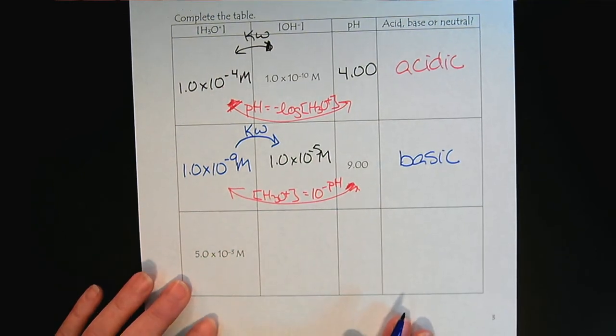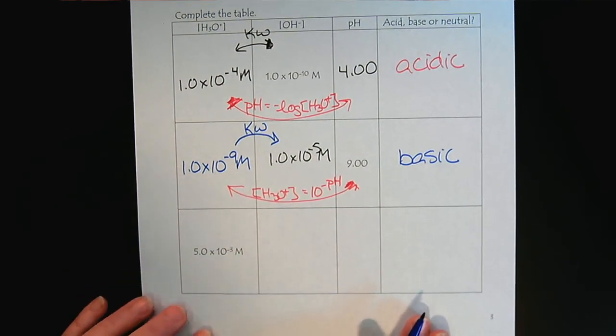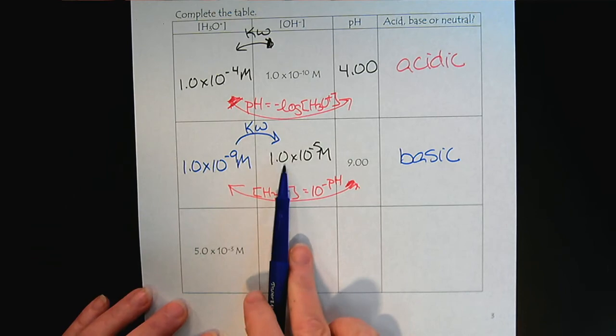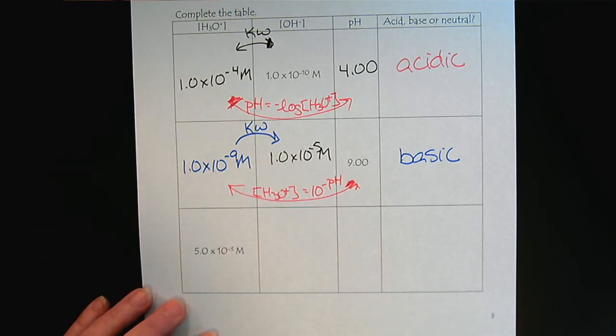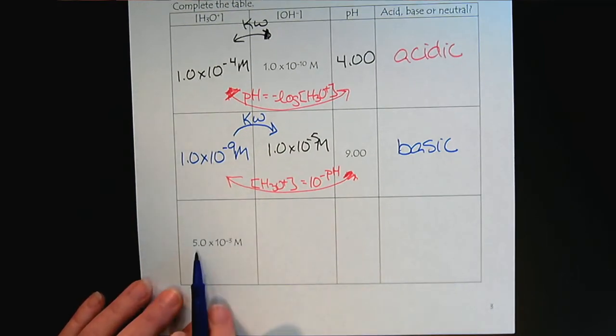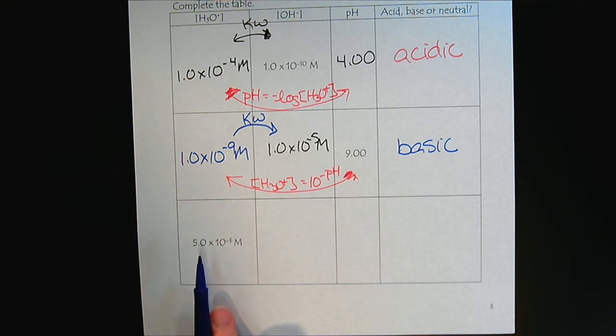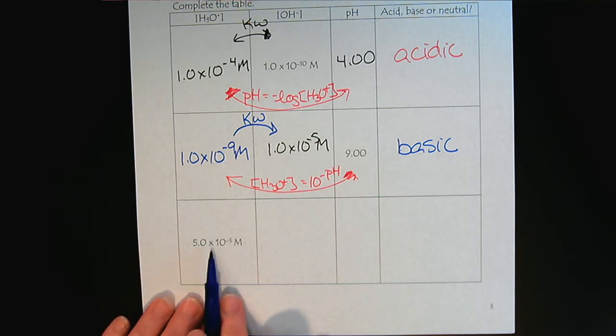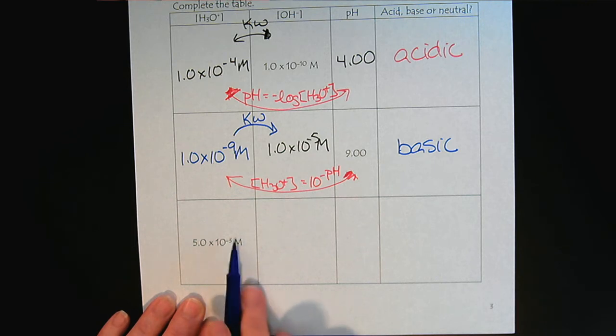So when you get to your bio classes, they don't let you use calculators, but they tend to use coefficients of 1. There's one professor I know that will sometimes use a coefficient of 5. So let's do an example of that to help you. So here we have the hydronium concentration. So from here we can go directly to the hydroxide concentration and to the pH.